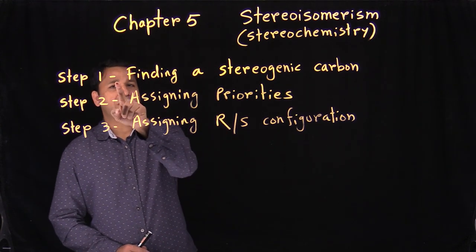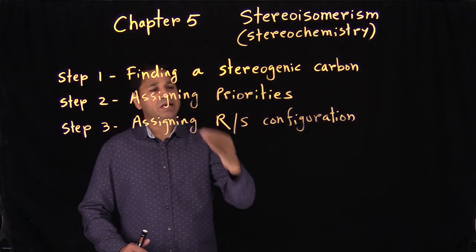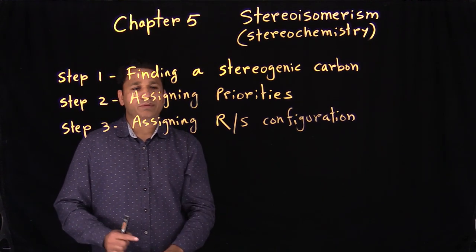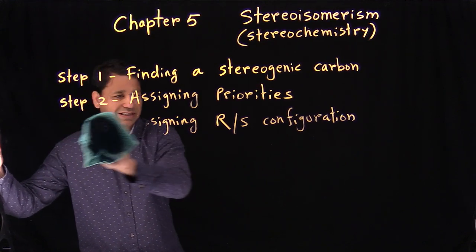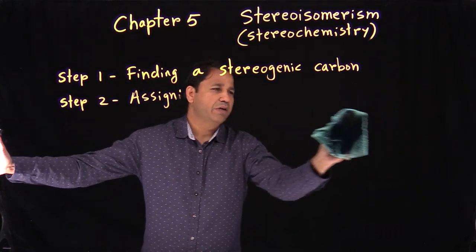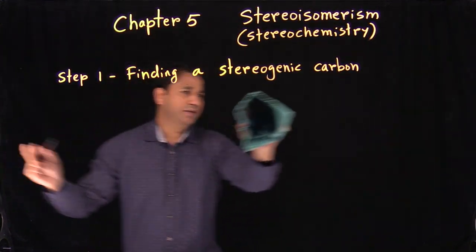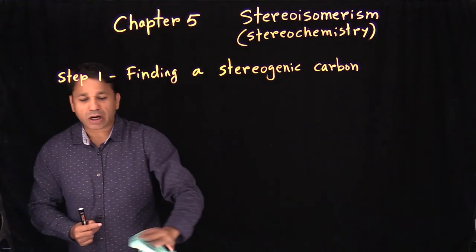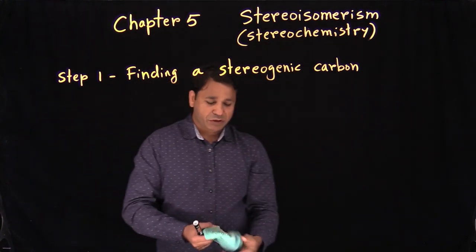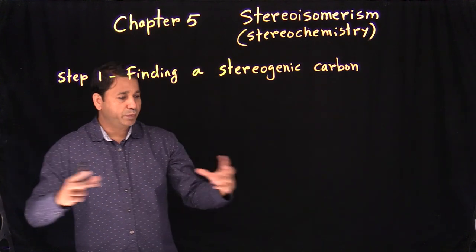We'll start with step one and learn everything in detail. Once we've got step one, we go to step two, and only then can we do step three. This chapter is actually very simple — you don't need deep chemistry knowledge. It's more like a puzzle: how can you put the pieces together?